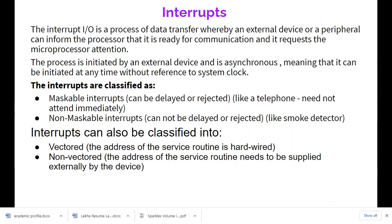Interrupts mainly take place between IO devices and external devices — it is a process of data transfer. It is mainly for transferring of data, whether input or output. Data transfer by an external device or peripheral can inform the processor that it is ready for communication and requires the microprocessor's attention.